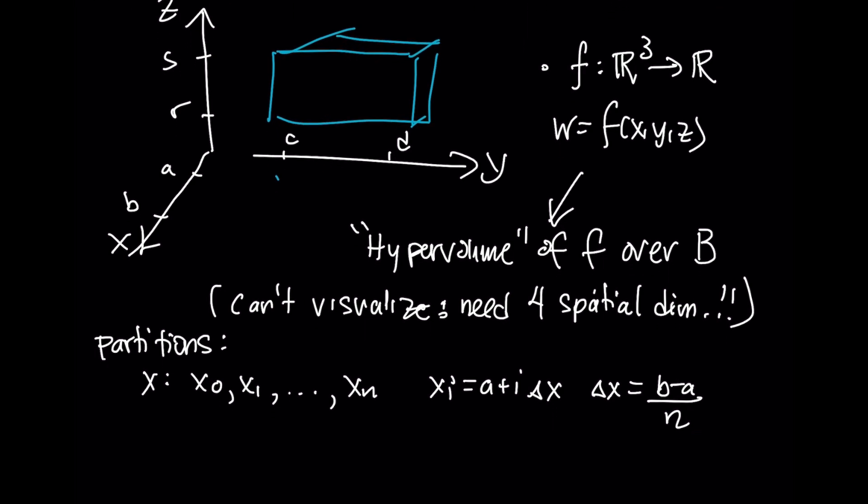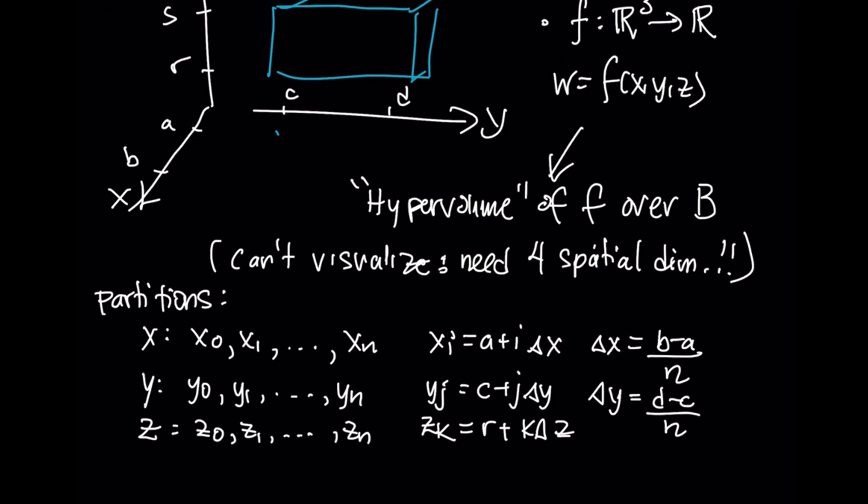So this will be what's called a regular partition. We will do exactly the same thing for Y. We'll go all the way up to Yn. Y will be indexed by the letter J, and we'll have this delta Y being, once again, a regular partition with the same number of subdivisions. And Z will also be defined in the same way, partitioned with the same number of variables. K will be the index here. It will go from R plus K delta Z, and delta Z will simply be this quantity right here.